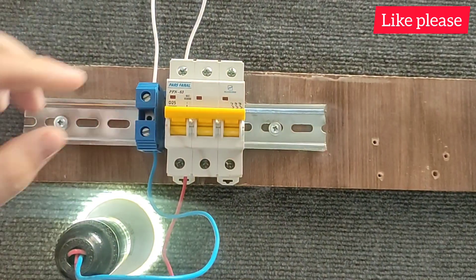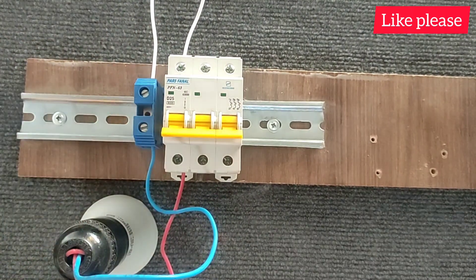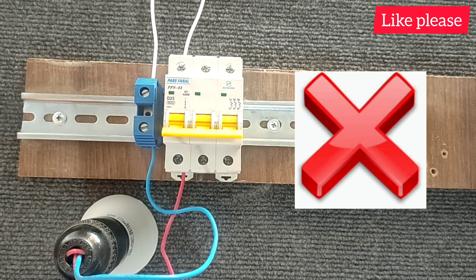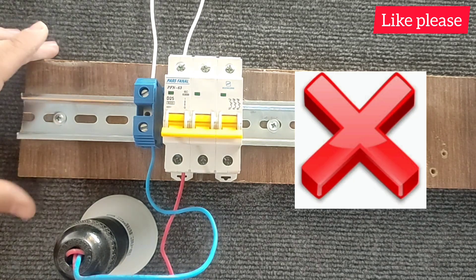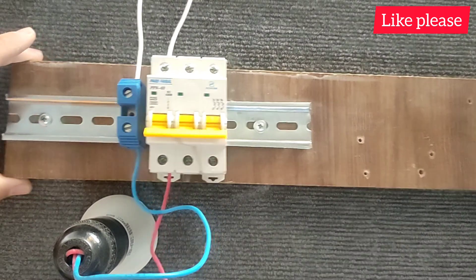You can see that the lamp is activated, but is this method correct? I tell you that this method is never correct because in this case the current only passed through one of the blades of the switch. And in this case, if a short circuit occurs, the switch cannot work properly and cut off the circuit.